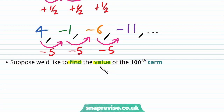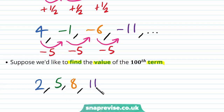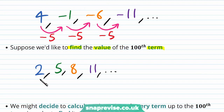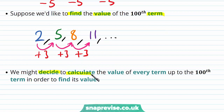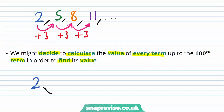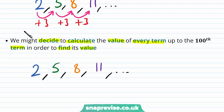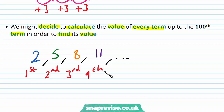But suppose we'd like to find the value of the 100th term in the sequence. Let's say we're considering the sequence which goes 2, 5, 8, 11, and so on. We can clearly see we are adding a constant number each time, in this case plus 3, but these are only the first 4 terms. If we wanted to find the 100th term this may be quite a difficult process. We might decide to calculate the value of every term up to the 100th term. As we saw we had 2, 5, 8, 11, and so on. We have our first 4 terms, and then we could continue: 14, 17, and so on.